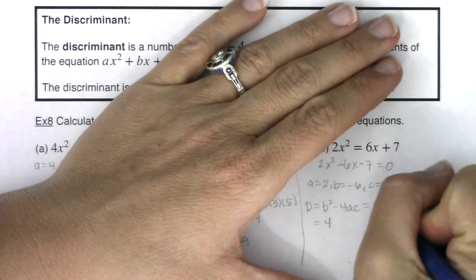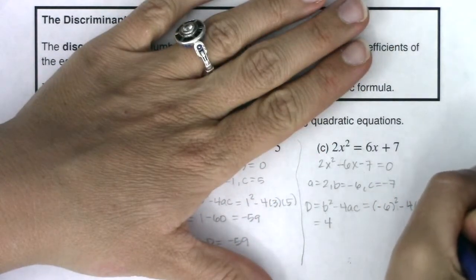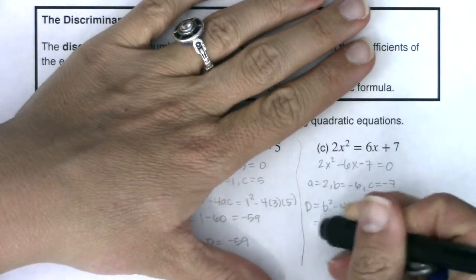So b squared is negative 6 squared minus 4 times a times c. That is very different. So now negative 6 squared is 36.